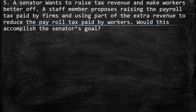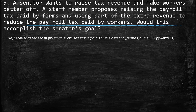The fifth point: a senator wants to raise tax revenue and make workers better off. A staff member proposes raising the payroll tax paid by firms and using part of the extra revenue to reduce the payroll tax paid by workers. Would this accomplish the senator's goal? Basically no, because as we saw in previous exercises, tax is shared between demand and supply. In this case, demand is firms and supply is workers, so both have to pay the tax. The workers are not going to be better off because they still have to pay part of the tax.